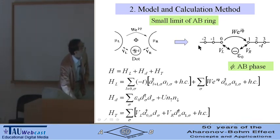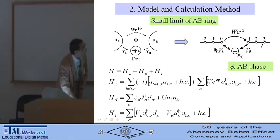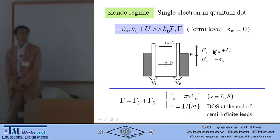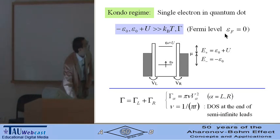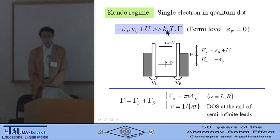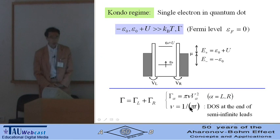Two leads are represented by a one-dimensional tight binding model. We are interested in the Kondo region, where a single electron is localized in the quantum dot. That is, addition energy of the single electron on the quantum dot, and also the extraction energy from the quantum dot, are much larger than the thermal fluctuation and level broadening Γ. Γ is given by this equation, and ν is the density of state in the lead.